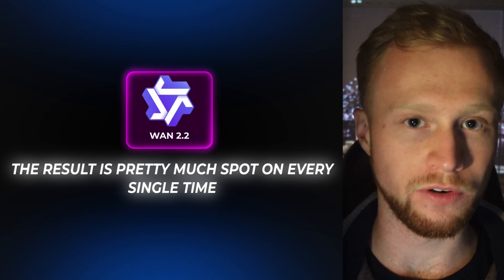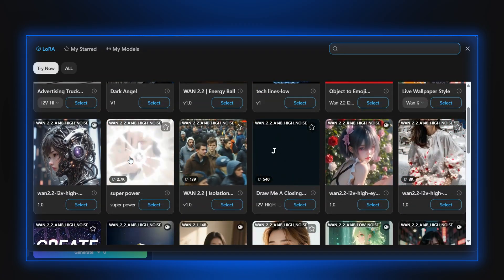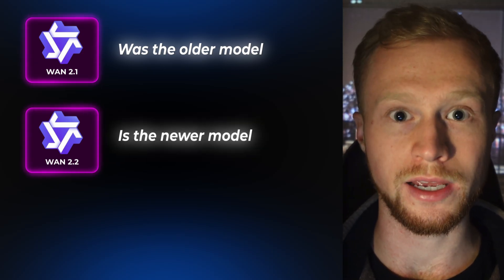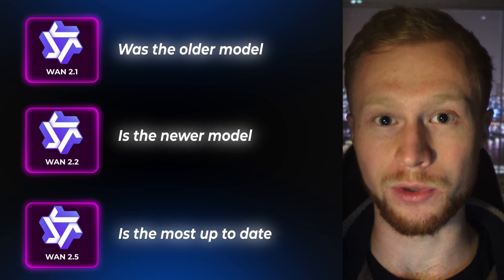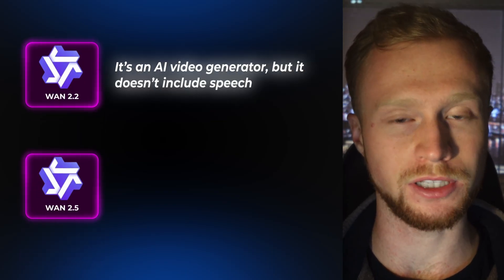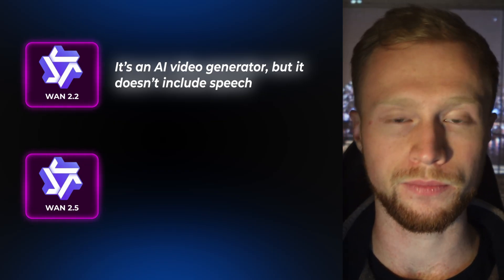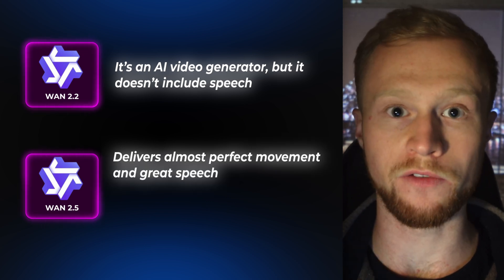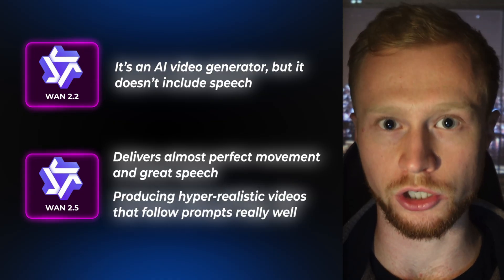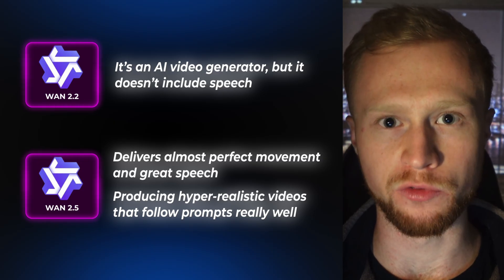These are the main reasons to use WAN over Flux. WAN also creates videos, which is great — Flux doesn't really do this and would normally use other video generation tools like Kling to make videos move. WAN 2.1 was the older model, WAN 2.2 is the newer model, and 2.5 is the most up-to-date and very impressive. WAN 2.2 AI video generation is very good; however, it does not have speech included, so if you want the model to talk, that won't happen. WAN 2.5 has movement that is almost perfect, and also speech, which is very good. That means you can combine the two — get hyper-realistic videos while maintaining good structure on the AI model and responding well to prompts with WAN 2.5. However, WAN 2.5 doesn't have movement LORAs, but WAN 2.2 does.